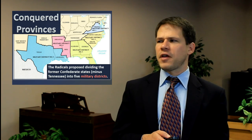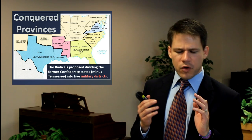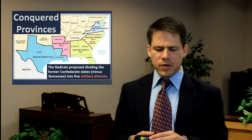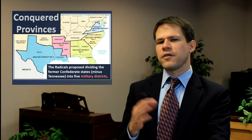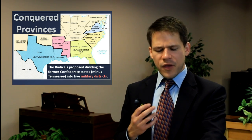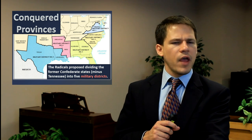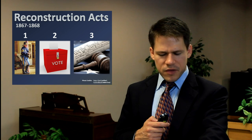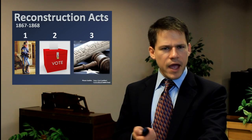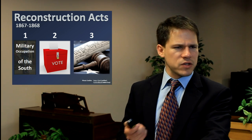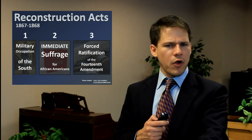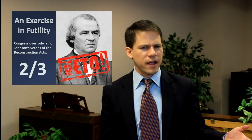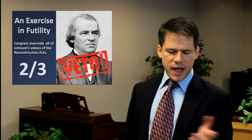The Reconstruction Acts established three things: first, military occupation of the South; second, immediate suffrage for African-Americans; and third, forced ratification of the 14th Amendment. The South was divided into military districts and treated as conquered provinces. Johnson vetoed the Reconstruction Acts, but that didn't do him much good because Congress overrode his veto by a two-thirds vote.